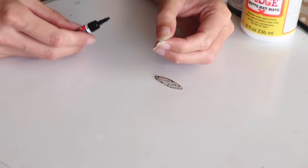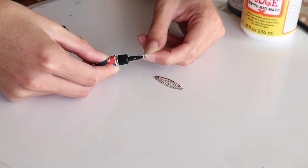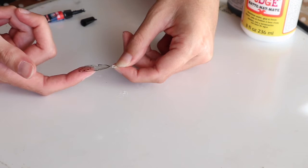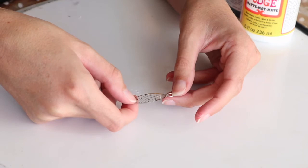Apply some glue on your jump ring and place it at the top of your wing. Wait for the glue to stick to your wing.